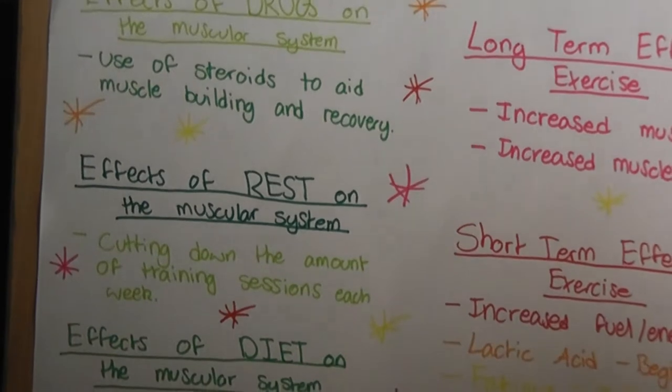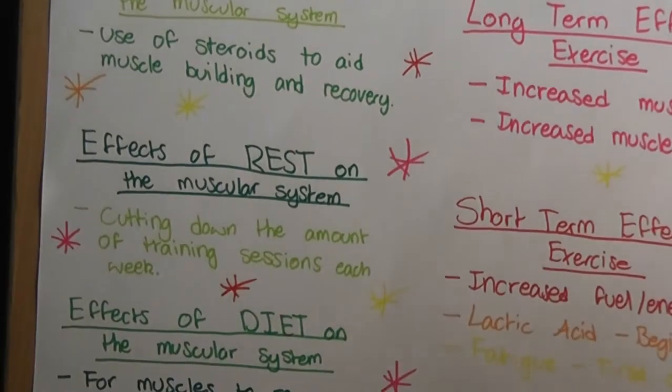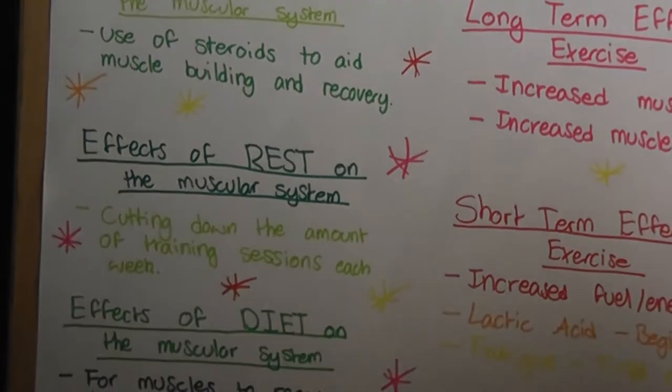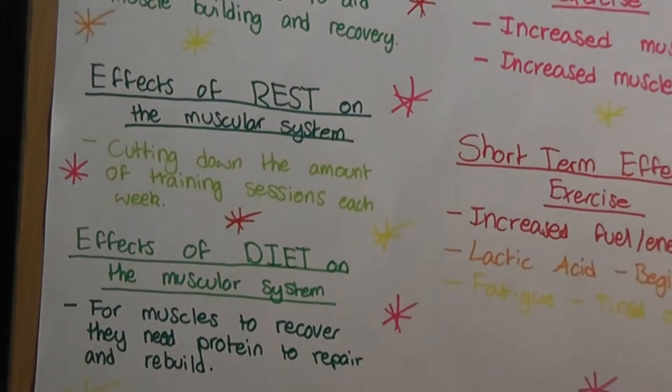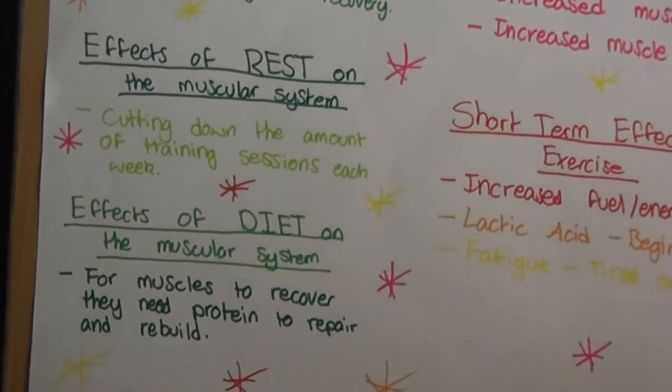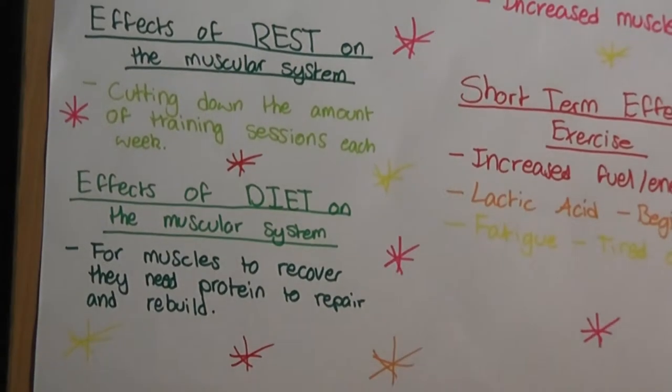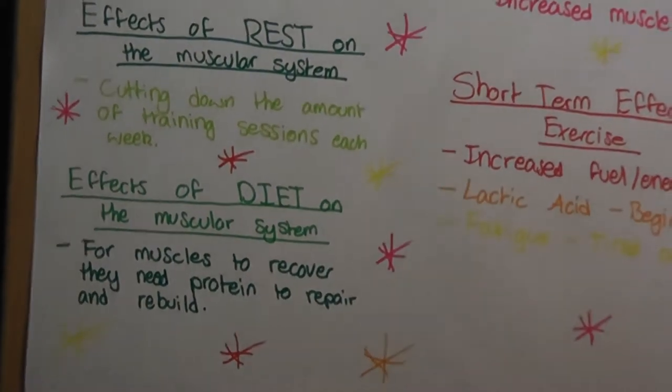Effects of rest on the muscular system: cutting down the amount of training sessions each week. Effects of diet on the muscular system: for muscles to recover, they need protein to repair and rebuild.